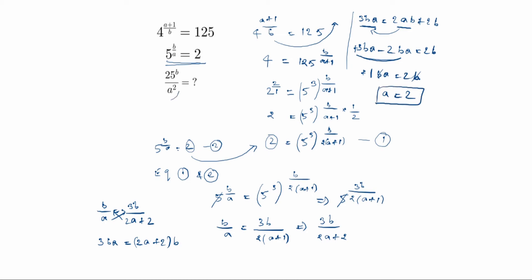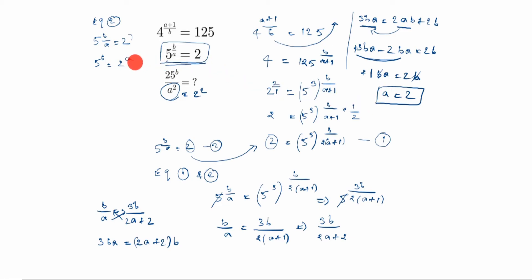After finding a equals 2, we go to equation 2: 5 power b by a equals 2. So 5 power b equals 2 to the power a. Substituting a equals 2, we get 5 power b equals 2 squared, which means 5 power b equals 4.